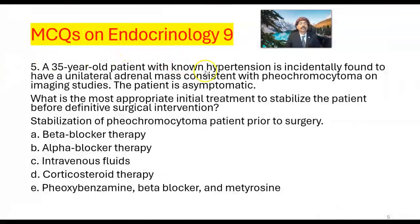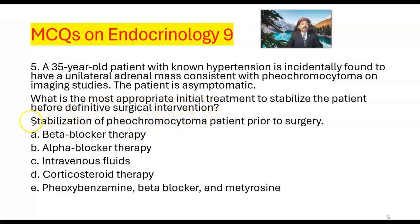Question number five. A 35-year-old patient with known hypertension is incidentally found to have a unilateral adrenal mass consistent with pheochromocytoma on imaging studies. The patient is asymptomatic. What is the most appropriate initial treatment to stabilize the patient before definitive surgical intervention? Choices are: A. Beta-blocker therapy, B. Alpha-blocker therapy, C. Intravenous fluids, D. Corticosteroid therapy, E. Phenoxybenzamine, beta-blocker, and metyrosine.